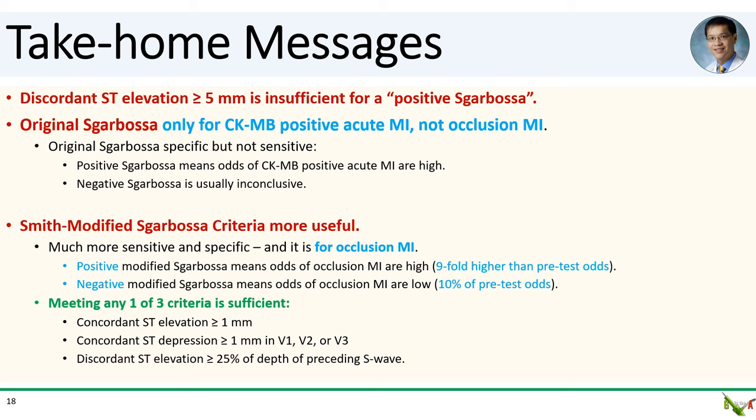Take-home messages: The first is that the most often cited Sgarbossa criterion — discordant ST elevation of 5 mm or more — is not sufficient for a positive Sgarbossa; it only gets two of the three points you need. The second is that the original Sgarbossa is only used to predict CKMB-positive MIs, not STEMI equivalent occlusion MIs. It is specific but not particularly sensitive — a positive Sgarbossa means elevated cardiac enzymes are likely, but a negative Sgarbossa is usually inconclusive.